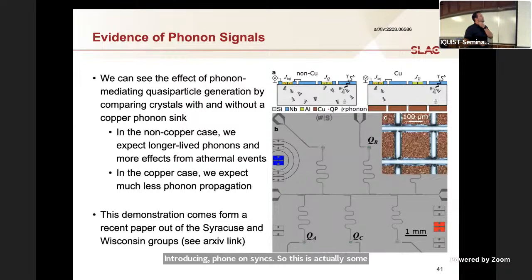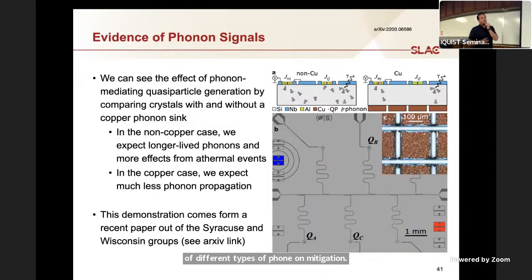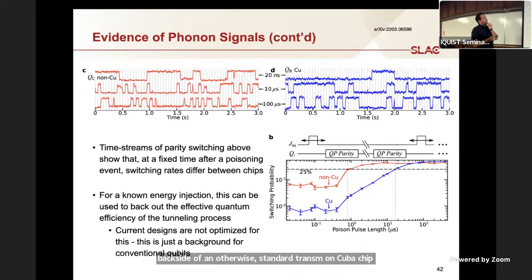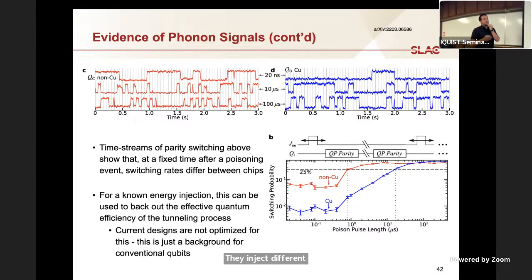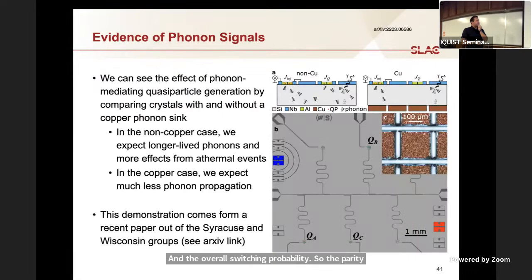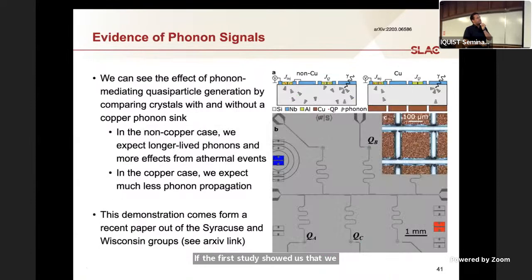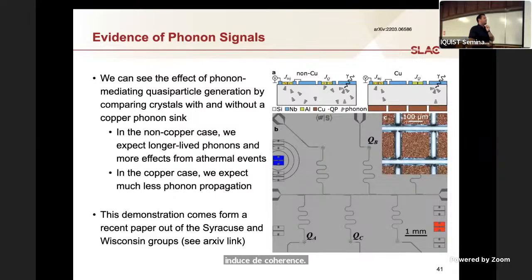There's a lot of work going into mitigating radiation effects in conventional qubits. We're working on some of that. A lot of that has to do because now we all identify this as a phonon problem with introducing phonon sinks. This is actually some nice work from collaborators at Syracuse. They took a conventional qubit chip and they added a bunch of different types of phonon mitigation. In this one, they're electroplating copper on the backside of an otherwise standard transmon qubit chip. They inject different pulse lengths into another junction, basically a junction radiator. In the non-copper chip, you can see a pretty clear correlation between the injected energy and the switching rate.